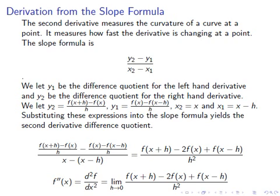Substituting these expressions into the slope formula yields the second derivative difference quotient. So [f(x+h) minus f(x)] / h minus [f(x) minus f(x-h)] / h, all over x minus (x minus h), yields — when you simplify — f(x+h) minus 2f(x) plus f(x-h), all over h squared.